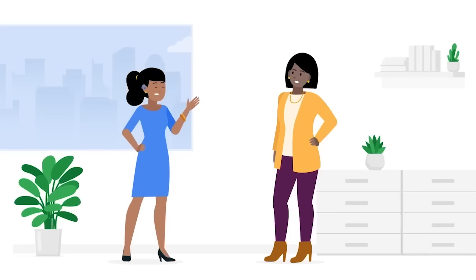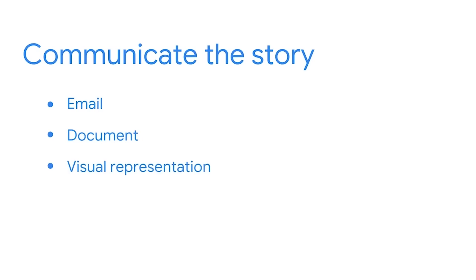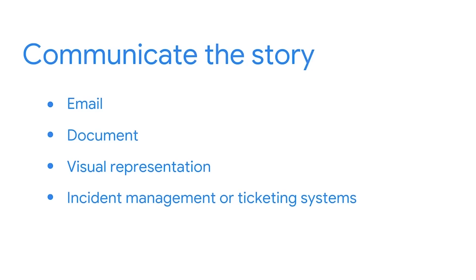This shows your supervisor that you've been paying attention to the procedures already established by the team. The final piece of your story is to provide a possible solution to the issue. In this scenario, you may not be the final decision maker regarding what action is taken, but you've explained to the stakeholder what has happened and a possible solution to the problem. You can communicate this story in various ways: send an email, share a document, or even communicate through the use of a visual representation.